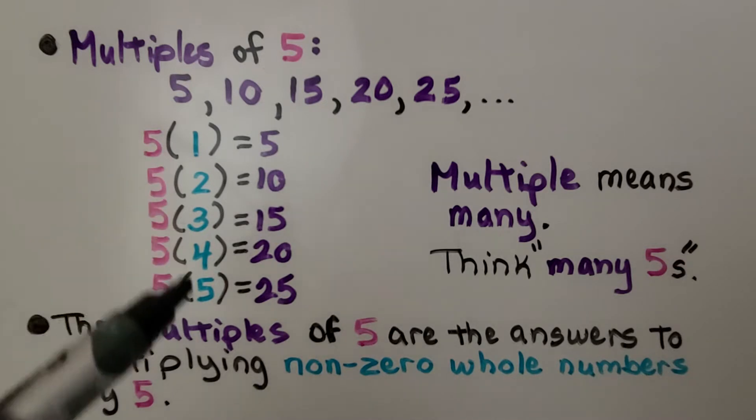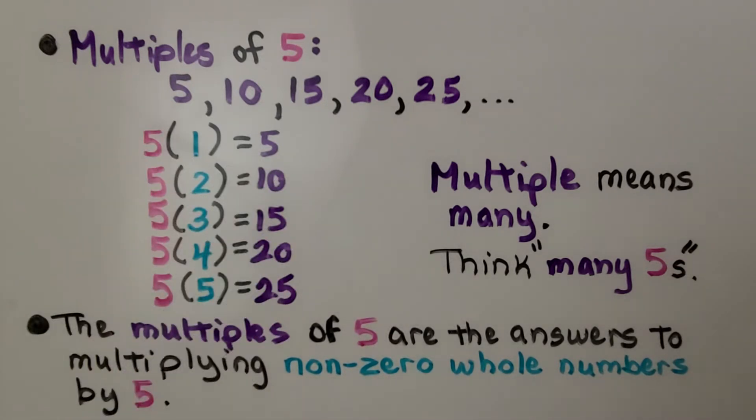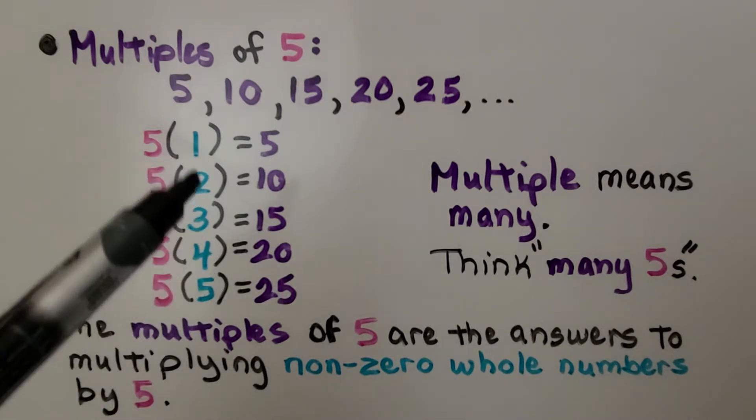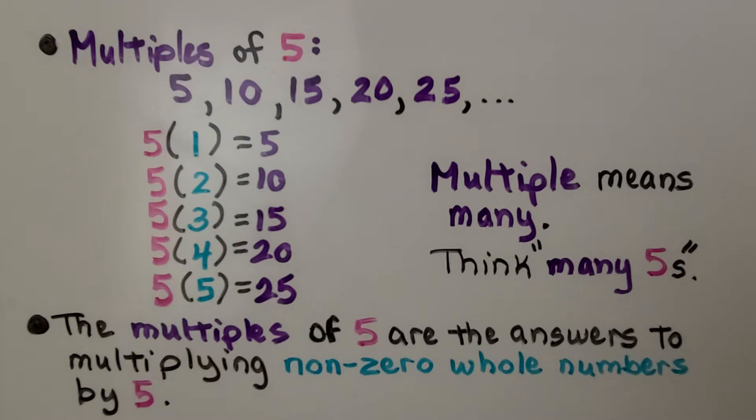The multiples of 5 are the answers to multiplying non-zero whole numbers by 5. Notice there's no zero, it's non-zero whole numbers.